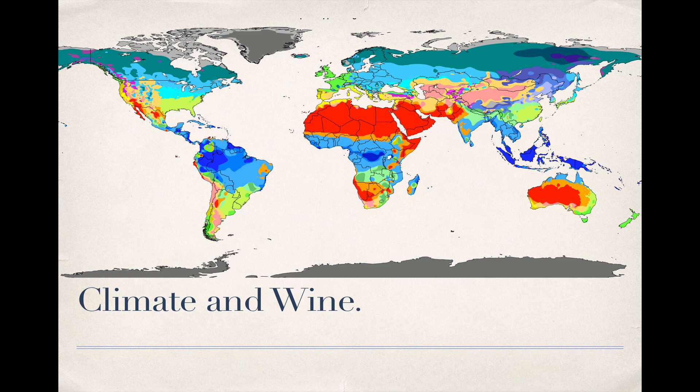After all, when was the last time you saw someone walk into a wine shop and ask for a bottle from a continental climate, for example? Still, it's worth giving this subject some attention, because an understanding of the climates in which grapes grow not only contributes to a holistic picture of how grapes come to be wine, but as more and more research on viticulture takes place, it's becoming clearer that the influence of climate on how grapes develop is profound, rivaling and perhaps even surpassing the influence of the soil on which the grapes are grown.